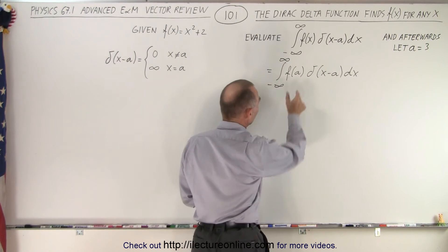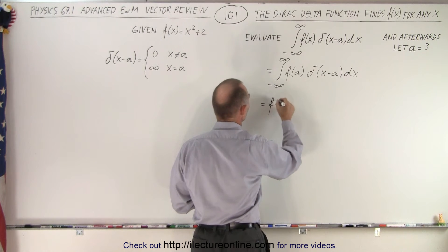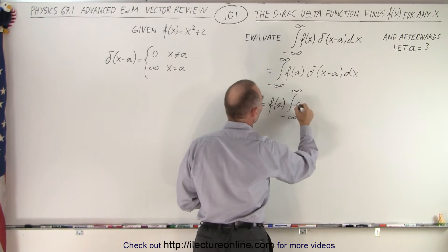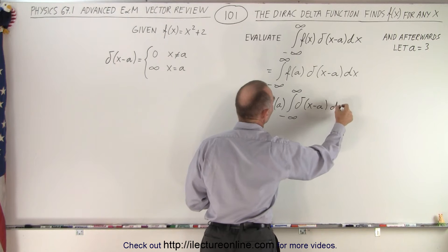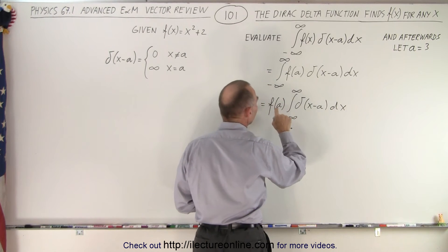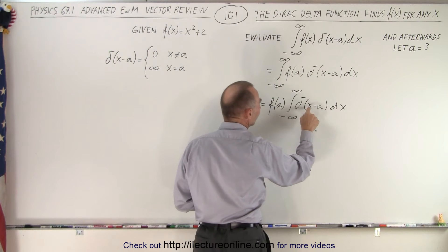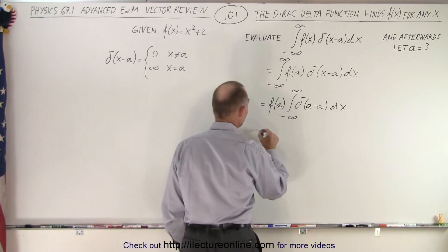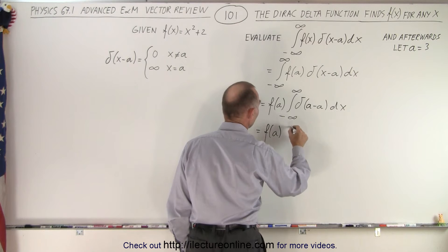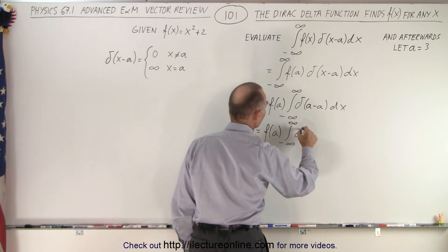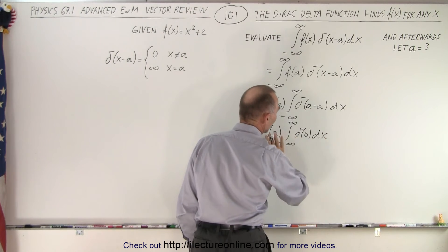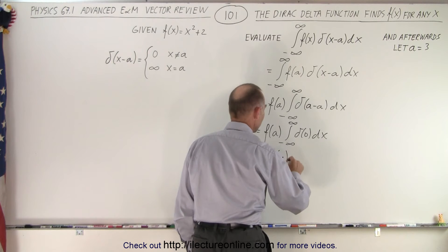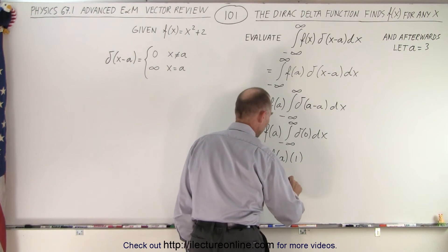Since f(a) is a constant, the integral becomes f(a) times the integral from minus infinity to positive infinity of delta of x minus a dx. Setting x equal to a, we can replace the argument with zero, giving us f(a) times the integral of delta of zero dx, which equals 1. So the whole expression reduces to f(a) times 1, which is simply f(a).